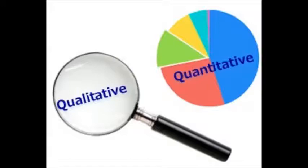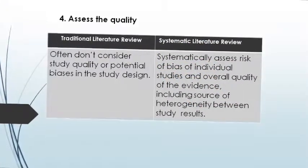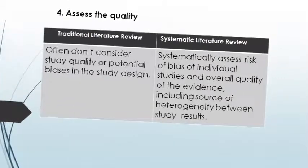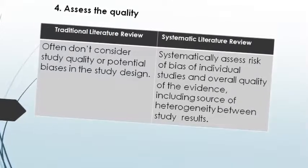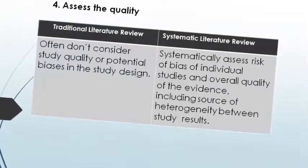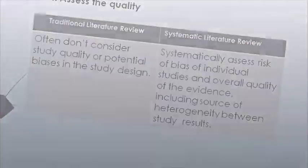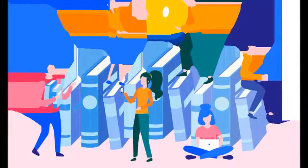The fourth difference is how they assess the quality of information. A traditional literature review often does not consider the quality or potential bias in the study design. However, a systematic literature review systematically assesses the risk of bias in individual studies, the overall quality of the evidence, and the sources of heterogeneity between studies and their results.